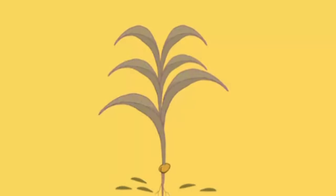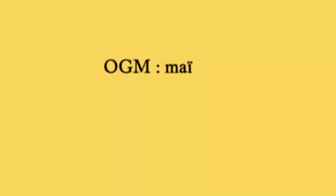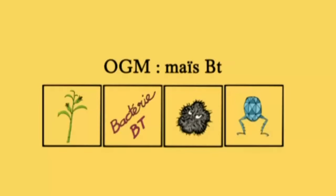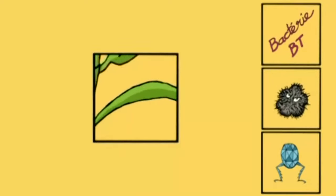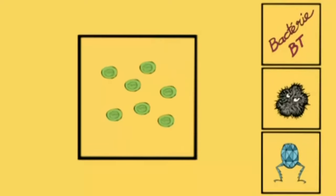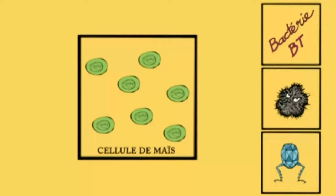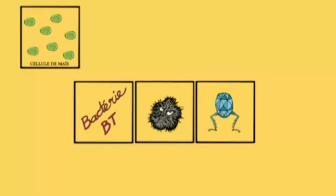Pour fabriquer un maïs Bt, c'est beaucoup moins précis qu'on veut nous le faire croire. Il faut un maïs évidemment, deux bactéries et un virus. Déjà, on ne prend pas un maïs entier, mais des cellules de maïs. Ensuite, il faut fabriquer un transgène.